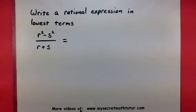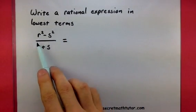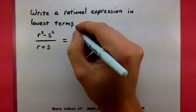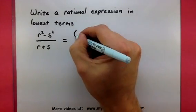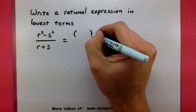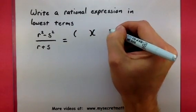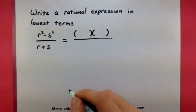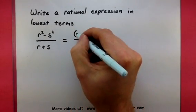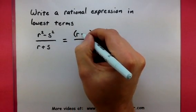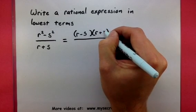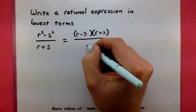In the top, notice how I have an r squared minus an s squared. This is known as the difference of squares, and it factors into an r minus s and an r plus s.